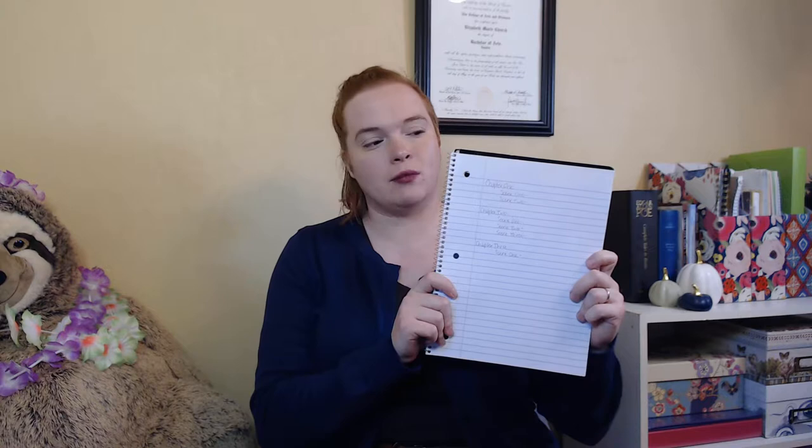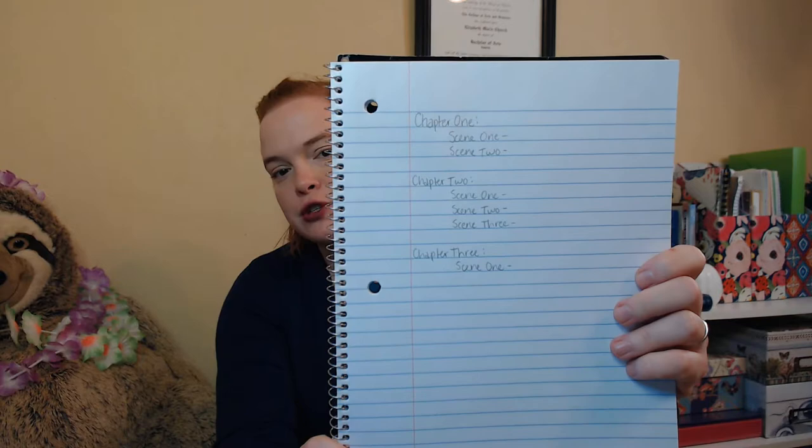I'm going to move it closer to the camera here in a minute. On this paper, I have written out chapter one, scene one, scene two; chapter two, scene one, scene two, scene three; chapter three, scene one. This is just kind of an idea of how you can outline your chapters versus scenes.